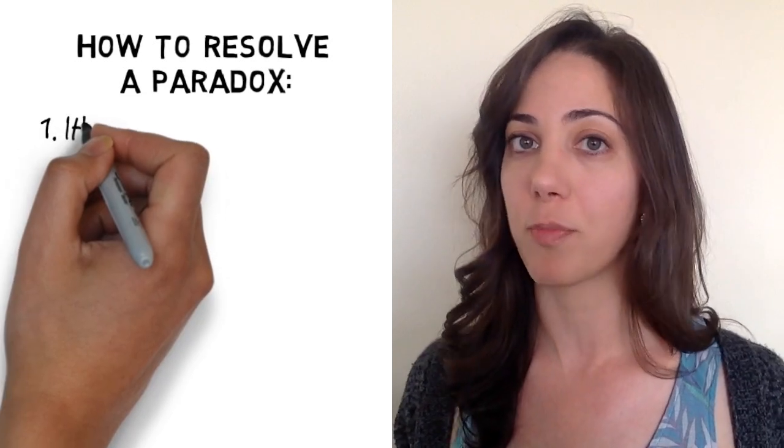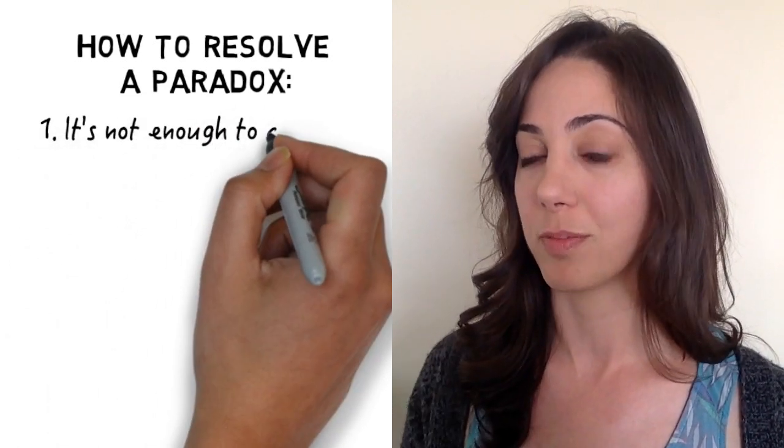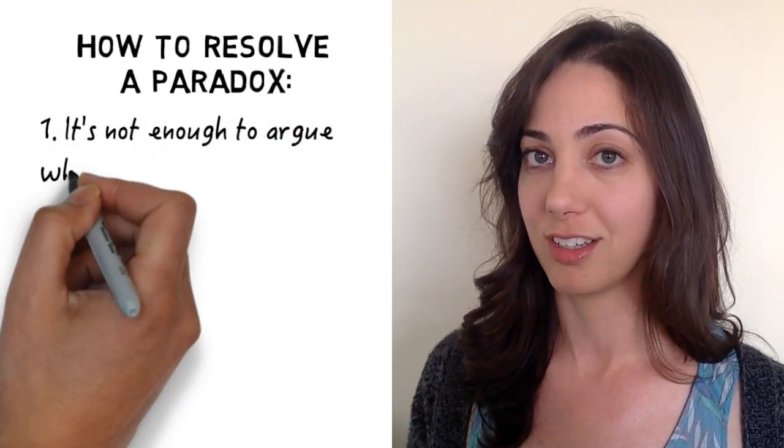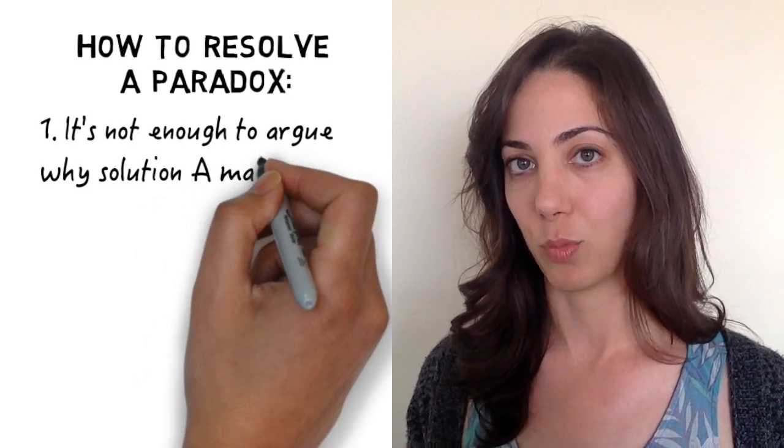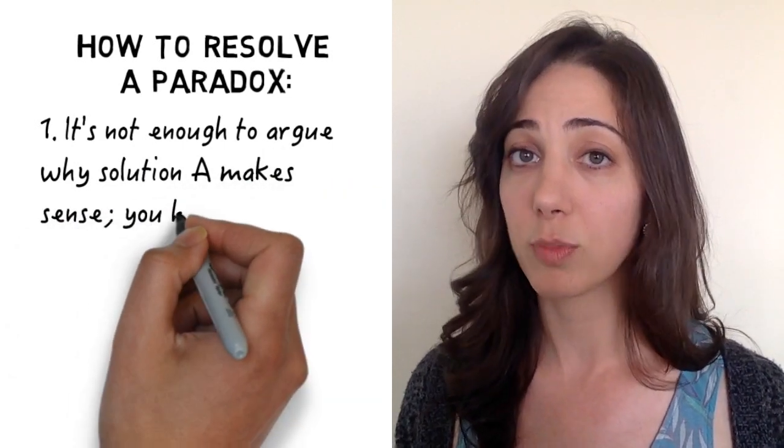For example, some people answered the Sleeping Beauty problem by saying it's got to be one half, and here's why one half makes sense. And of course you can make a logical-sounding argument for one half — the whole reason it's a paradox is that there's also a logical-sounding argument you can make for one third. You may not think it's logical, but in order to resolve the paradox you have to explain why that other argument isn't logical. It's not enough to just make a case for one.